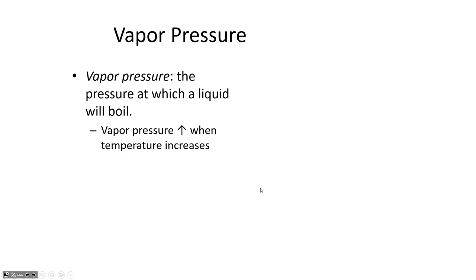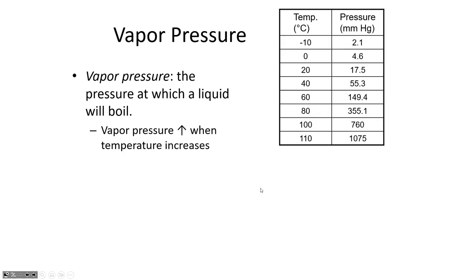After getting some blank stares on Monday when discussing cavitation, I added information about where cavitation comes from. Cavitation is a phenomenon related to vapor pressure. Every liquid has a different vapor pressure — alcohol evaporates more quickly than water so its vapor pressure is higher, while oil has a lower vapor pressure. For a given liquid, as temperature goes up, so does the vapor pressure.